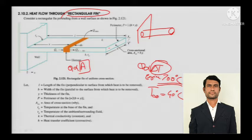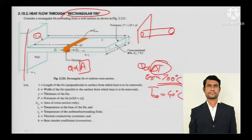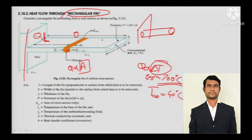Looking at the diagram: suppose this is the engine combusting at around 700°C, so the base temperature is T₀. The fin extends from it and has length L. We take an element within the fin. When heat transfers between solid surfaces there is conduction, and when there is a surface surrounded by an ambient fluid there will be convection. So we have both conduction and convection acting on the element.